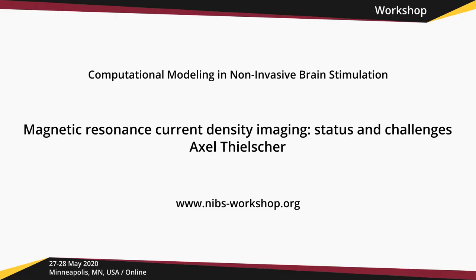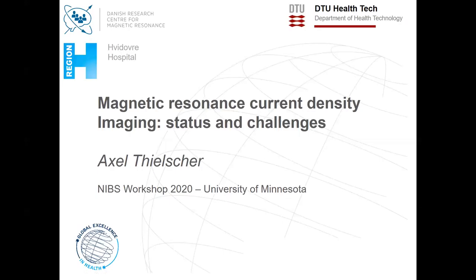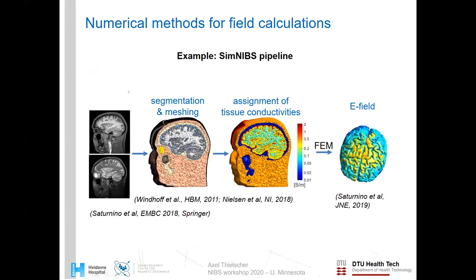That's something I'll cover now in the following. I'll talk about one method which we can use to validate the simulation results, and I'll give a summary of the status of this technique and also point out future challenges which still need to be resolved to really apply this method on a broader level. This method is called MR current density imaging. That's our pipeline which we develop here in Denmark — it's called Synapse.